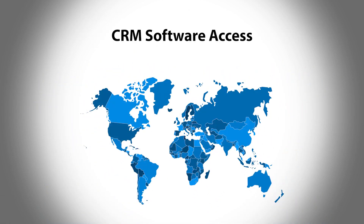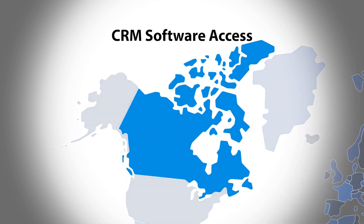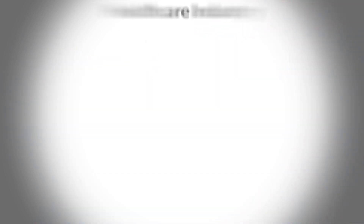CRM access. If some of your customers do business only in certain regions — let's say only in Canada — you can reduce exposure by limiting access outside of this region. If you notice attempted access from different regions, it's easier to detect potential attacks and block the access.